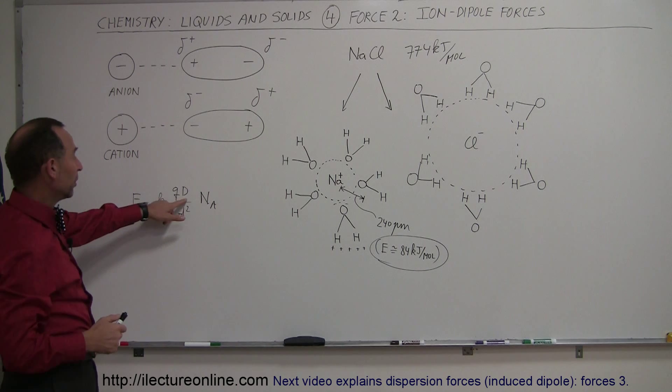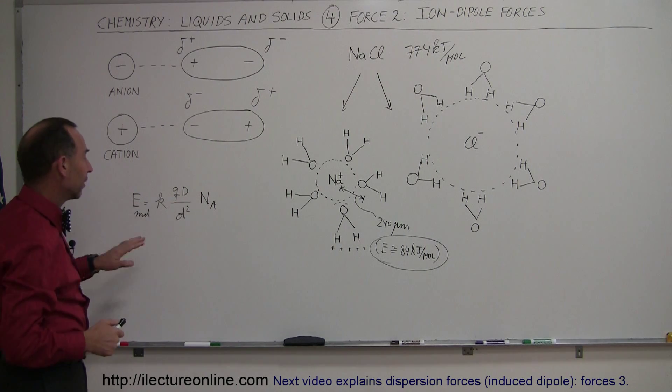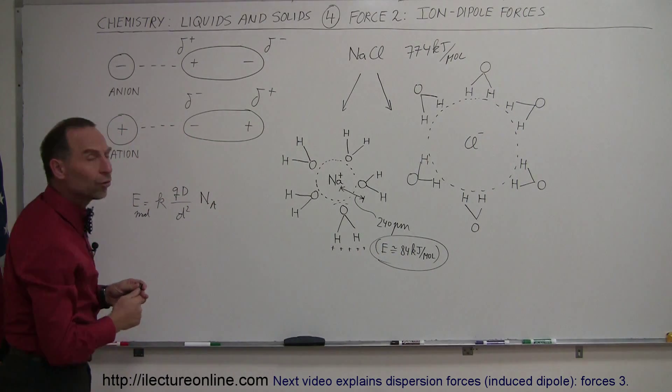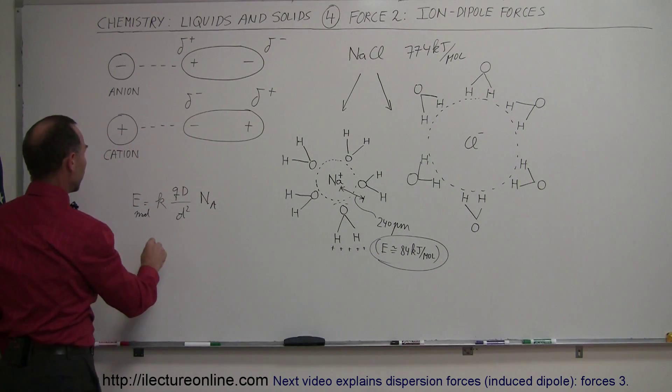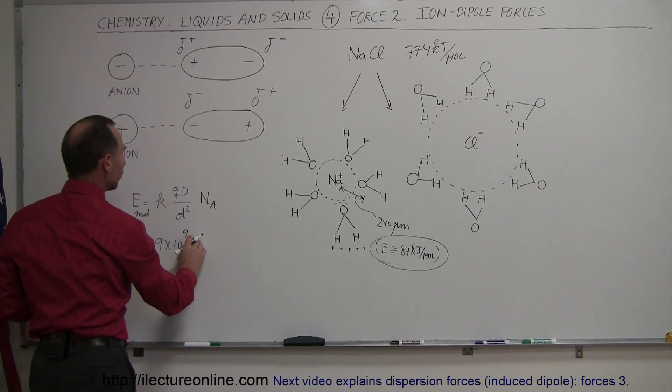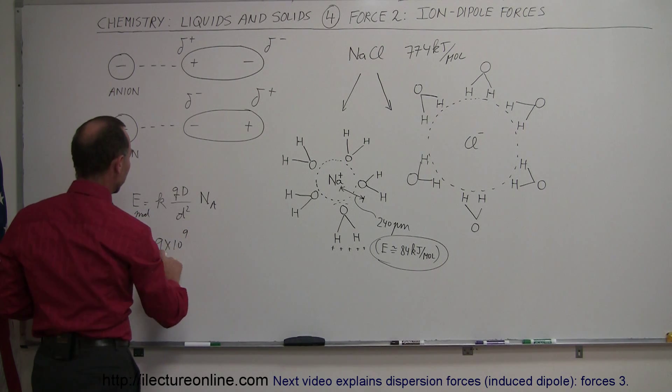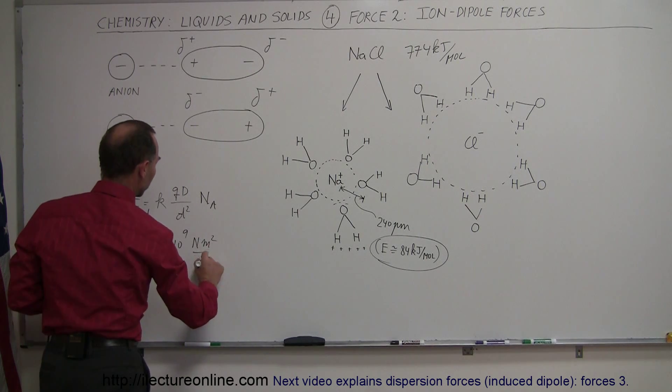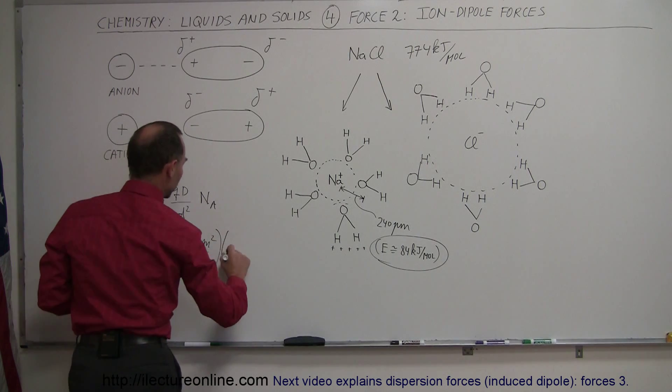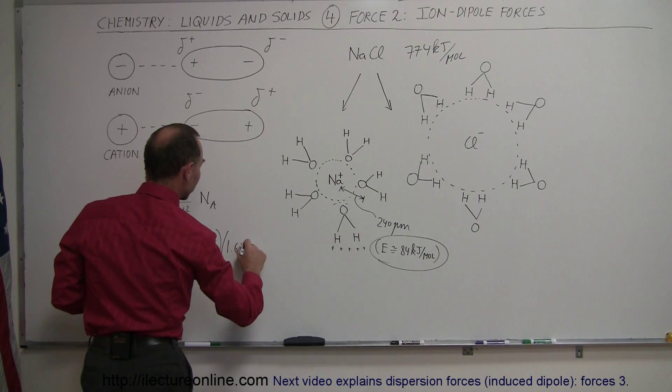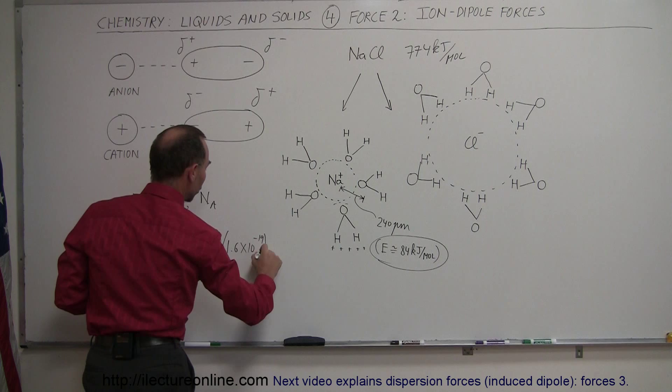For water, the dipole moment is 1.87 debye, and so let's go ahead and plug in those numbers and see if we get something that's close to the assumed result right there. So we use the K from the electrical equation, which is 9 times 10 to the 9th. That would be Newton meter squared per Coulomb squared. Well, why don't we write down Newton meter squared per Coulomb squared. Multiply that times the charge in a single sodium ion, which is 1.6 times 10 to the minus 19 Coulombs.